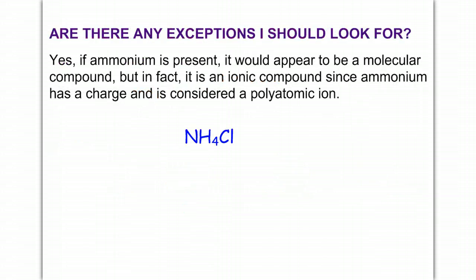All right, are there any exceptions that you should look for? Yes, if ammonium is present, you have to be careful, because ammonium, NH4, is a polyatomic ion, NH4 plus 1. And since it has a charge as a polyatomic ion, it's actually going to be considered an ionic compound in that case. So look out for NH4, ammonium, it should be your only polyatomic ion exception for this course.